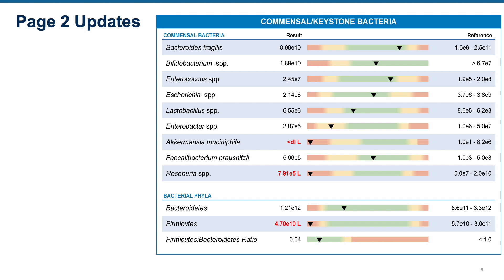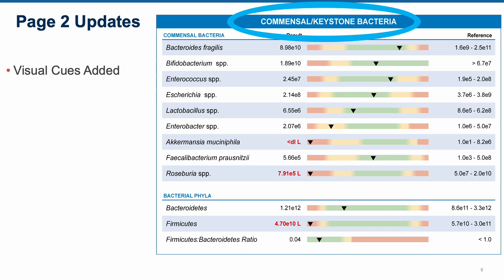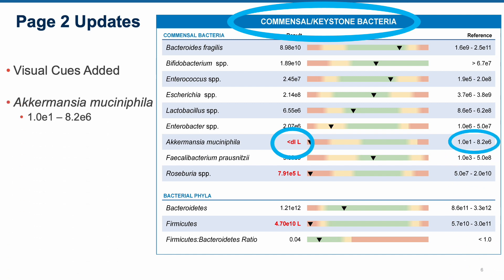You will notice the next section looks a little different. The section header has been changed from 'normal flora' to 'commensal keystone bacteria' to more accurately reflect the nomenclature and classification of these organisms. Visual cues have been added to quickly help you identify low-normal or high-normal levels of these bacteria. Levels below lab reference range and less-than-detectable levels are now flagged in red, where they were previously flagged yellow or black respectively. The reference range for Akkermansia muciniphila has been updated to reflect lab analysis and internal review. Finally, the bacterial class Clostridia has been replaced with Roseberia species to offer a more comprehensive picture of butyrate and short-chain fatty acid production by these commensal organisms.